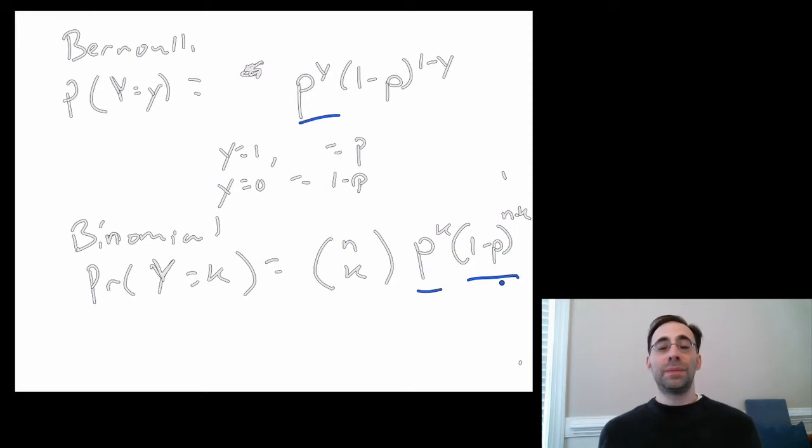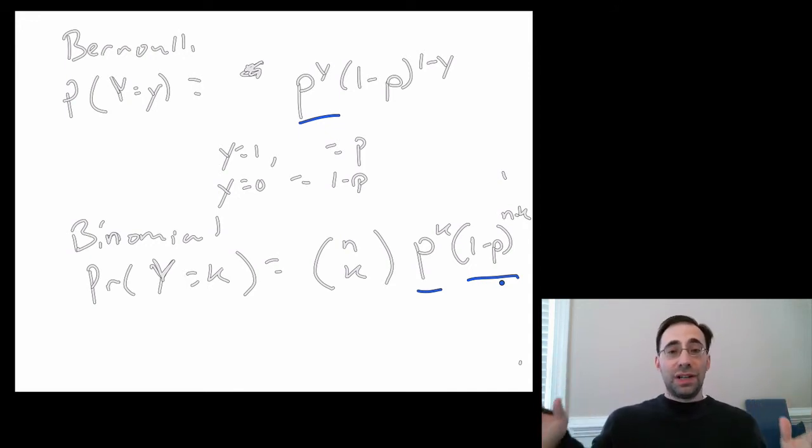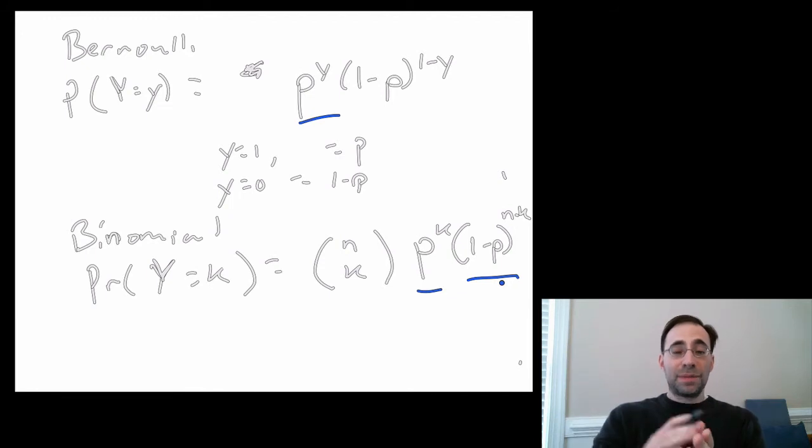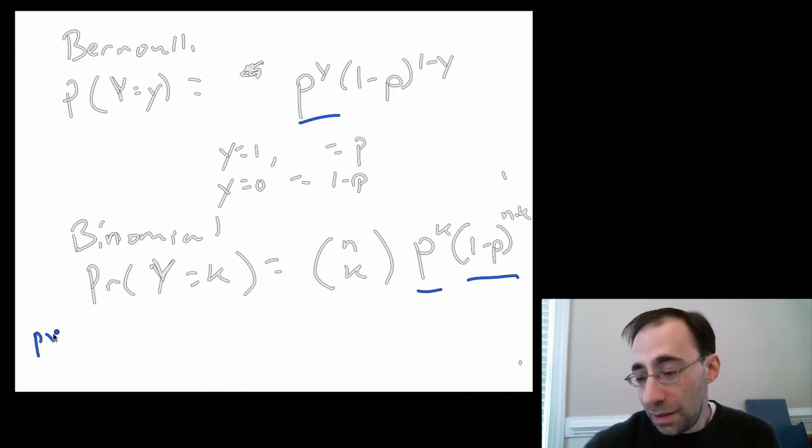So for instance, let's say you had three draws, three draws each probability p. Well, how would you get three positives, three ones, out of that draw? Well, there's a probability p in the first one, a probability p in the second one, and a probability p in the third one. For independent draws, the probability of one and one and one is just p times p times p, or p to the third.